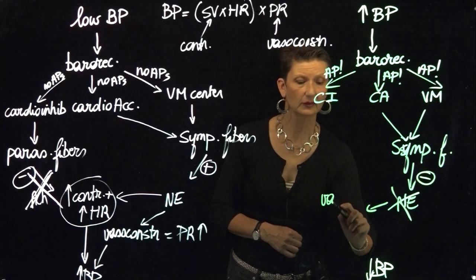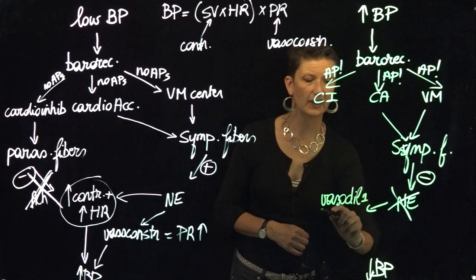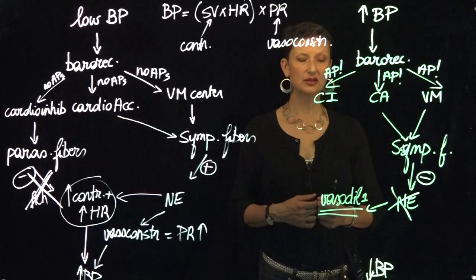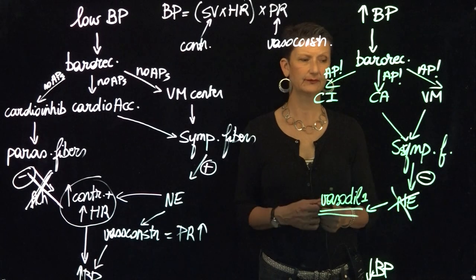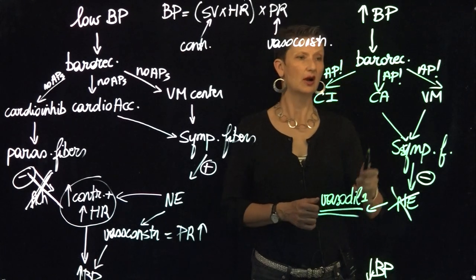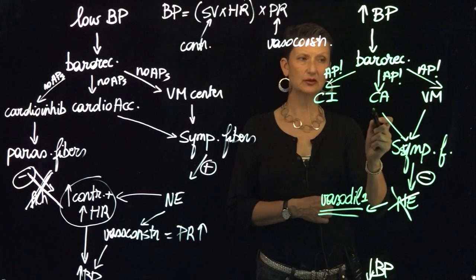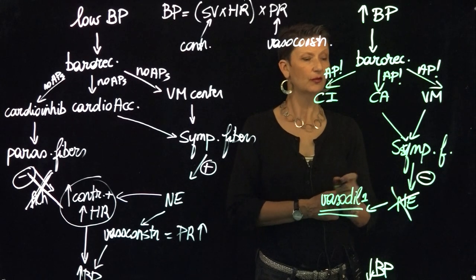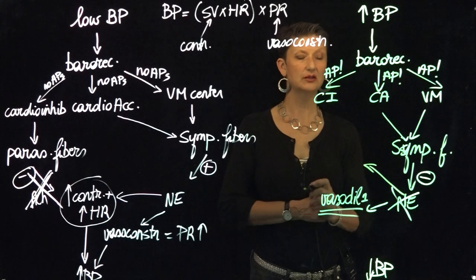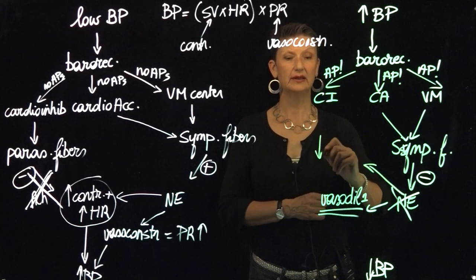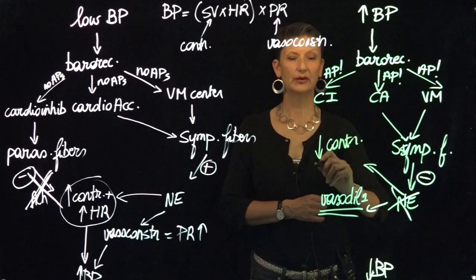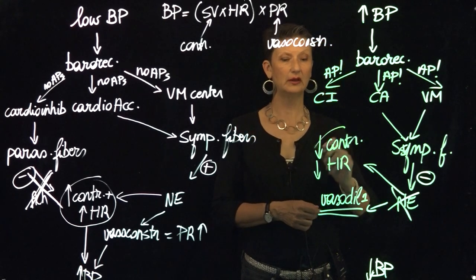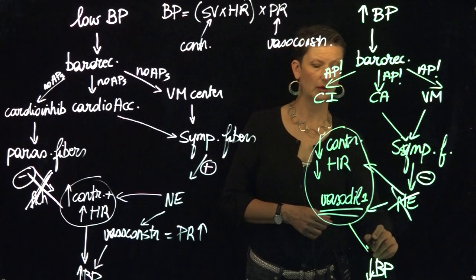So the opposite of vasoconstriction is vasodilation — but really, you need to think of it as less vasoconstriction. If the sympathetic fibers are inhibited via the cardioacceleratory center, it's also a good idea for norepinephrine to not reach the heart, so that we will bring down contractility and bring down our heart rate, because norepinephrine is not landing on the heart. And so all of these three things are going to bring our blood pressure down.